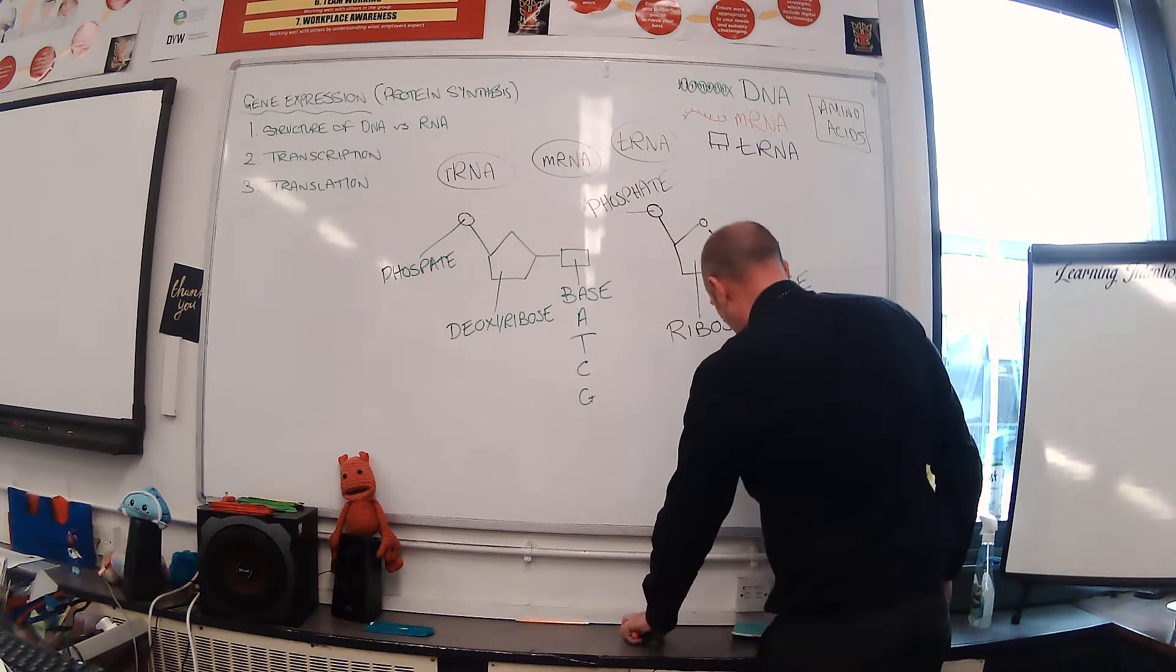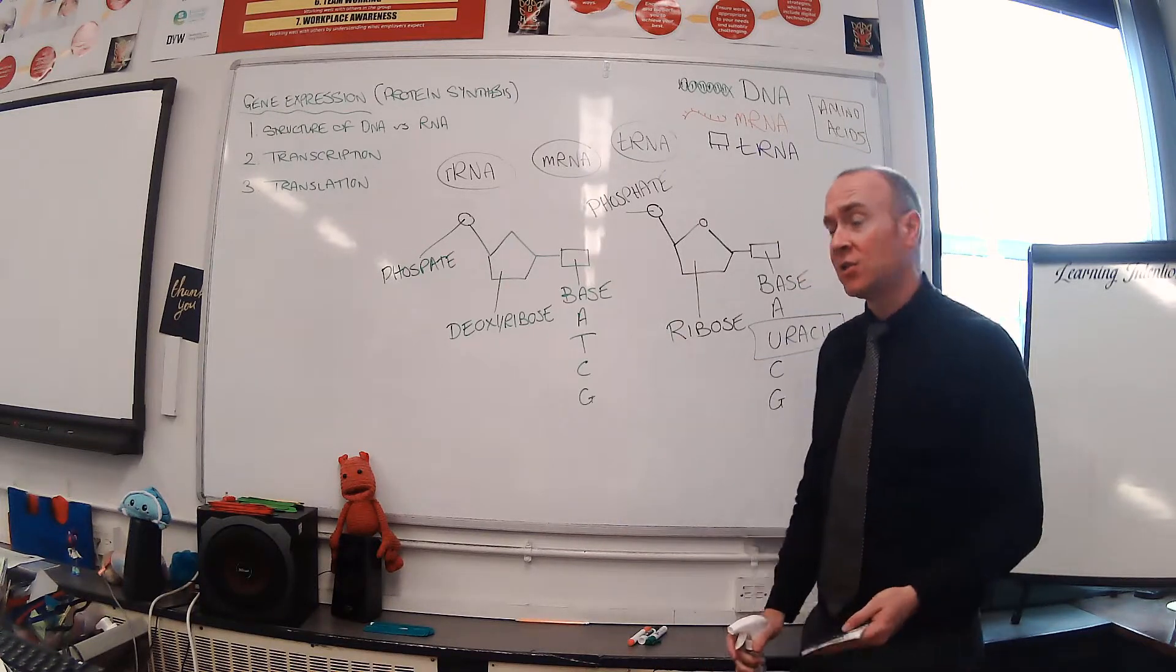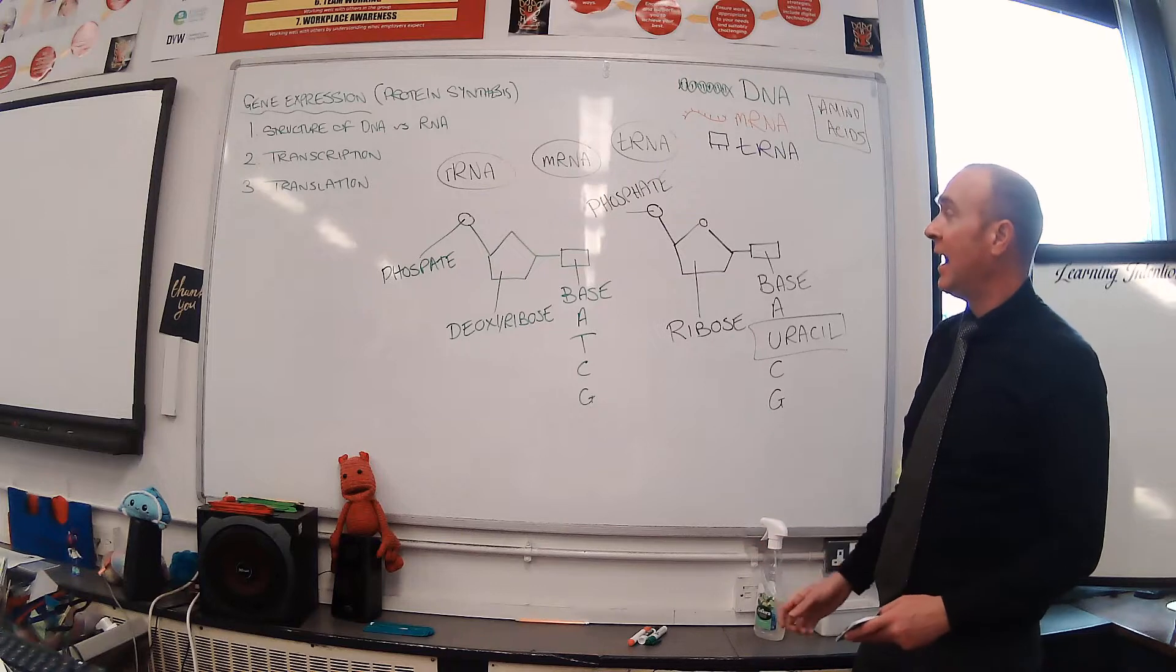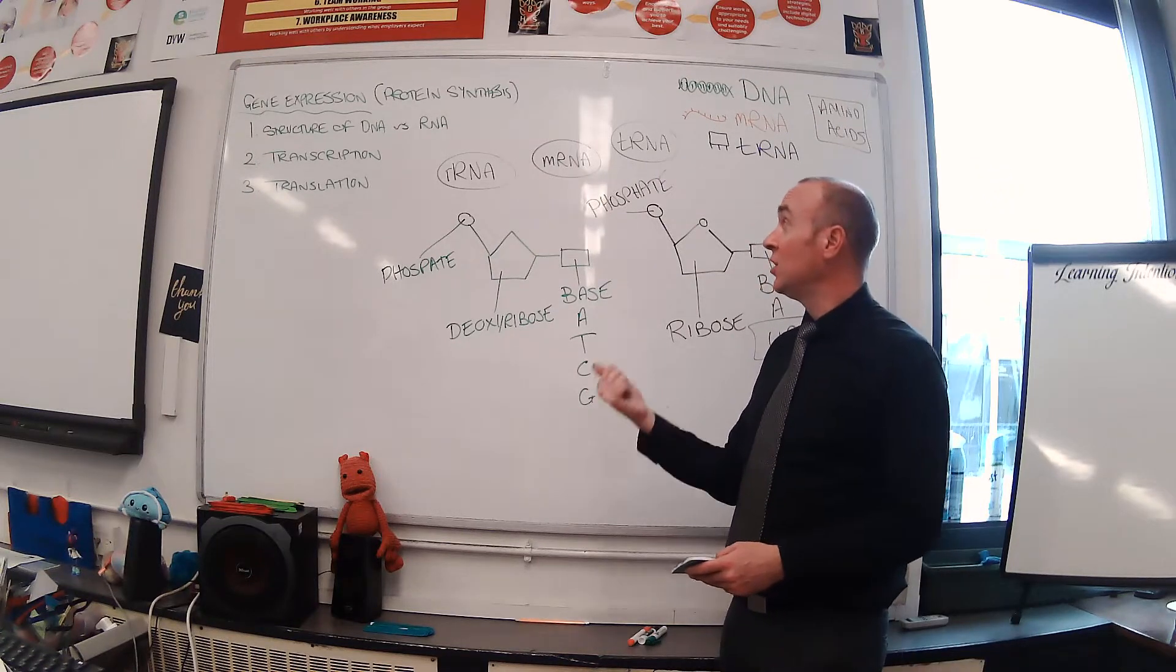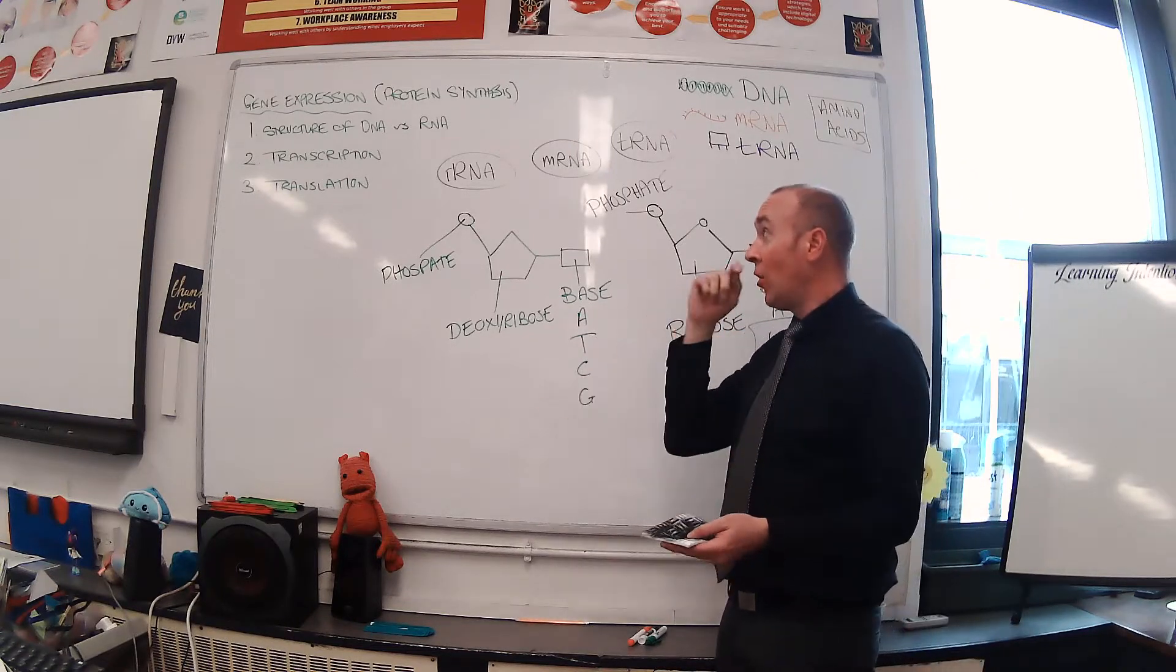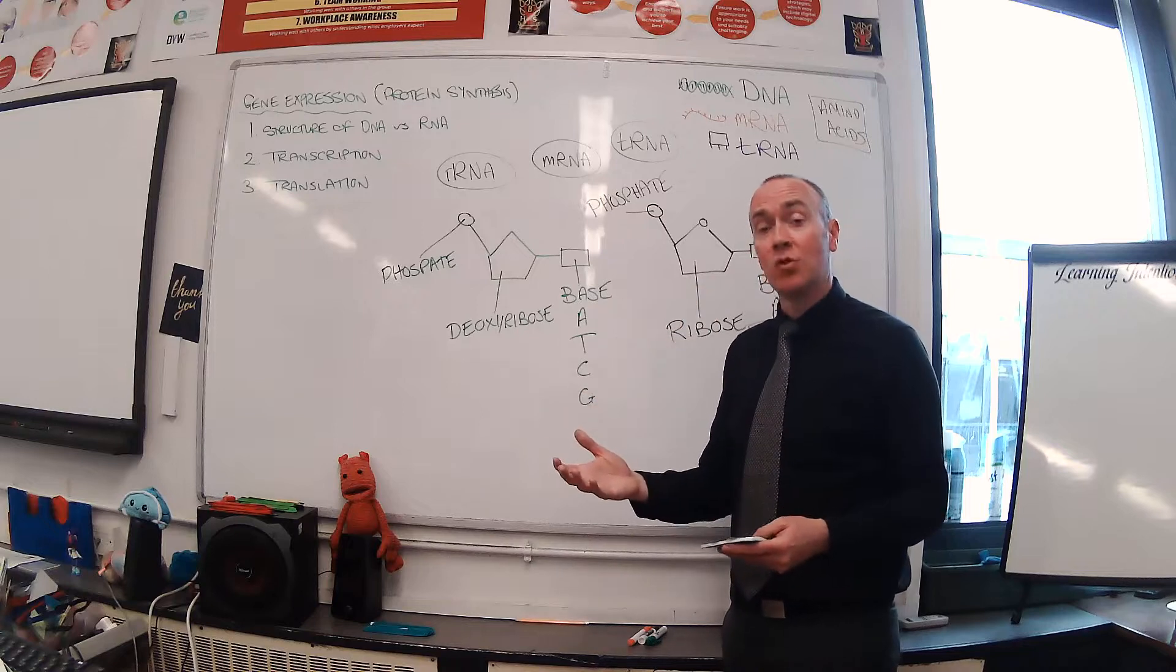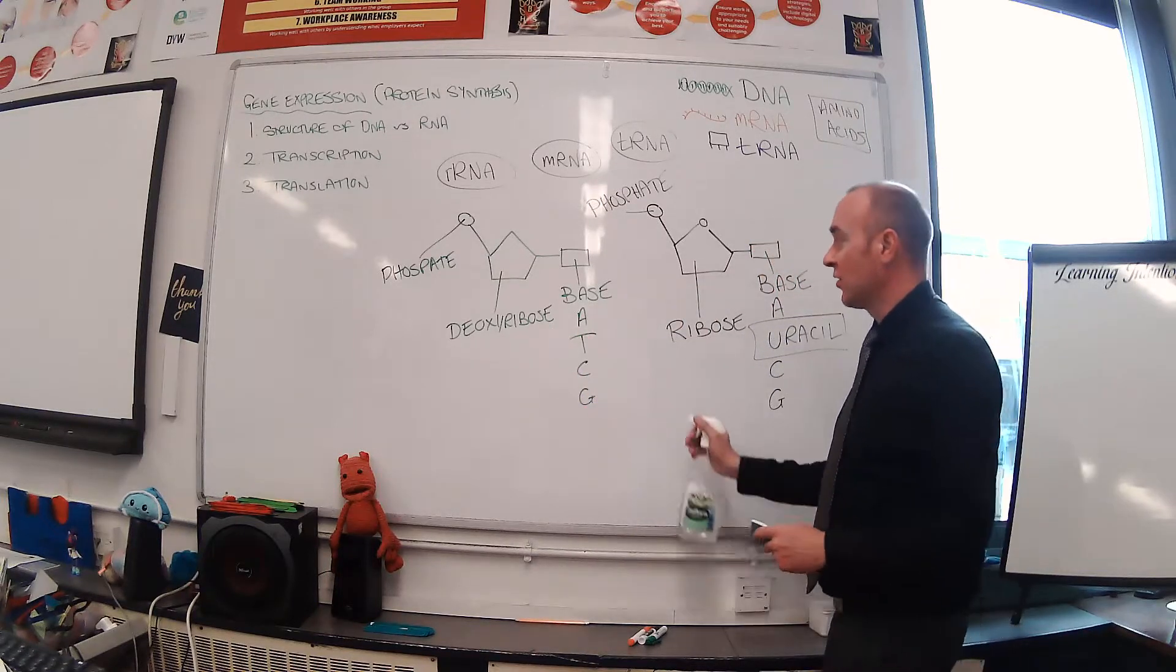In terms of where they are found in the cell, you'll only ever find DNA in the nucleus, whereas RNA can be found in the nucleus where it's made, in the cytoplasm if it's carrying signals or an amino acid, or it can be found as part of the ribosome as well.